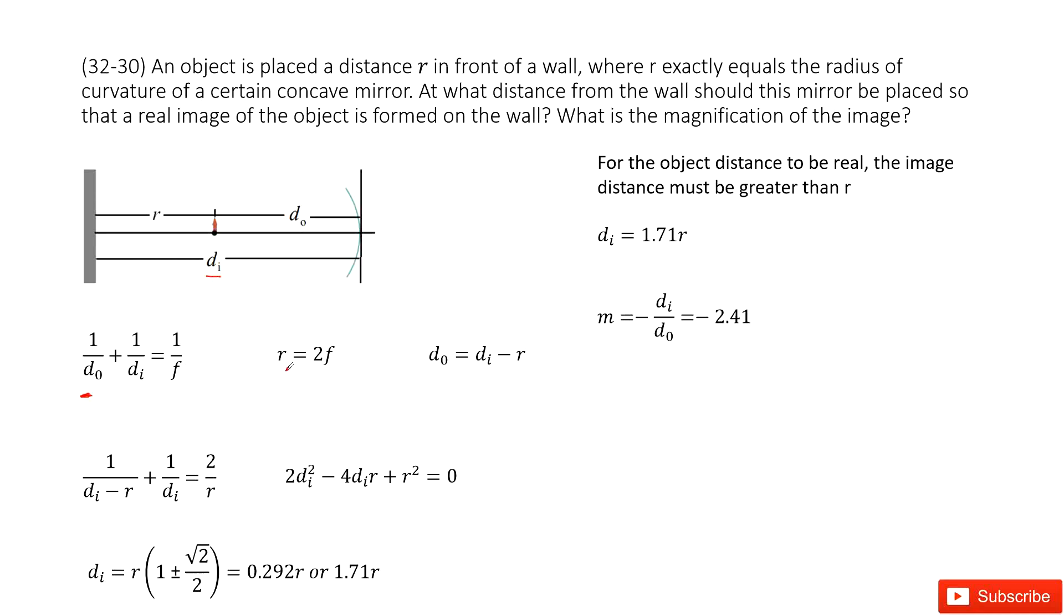And the focal length can have a relationship with the radius. We know the radius is equal to 2 times f. And this one we can get from the picture.